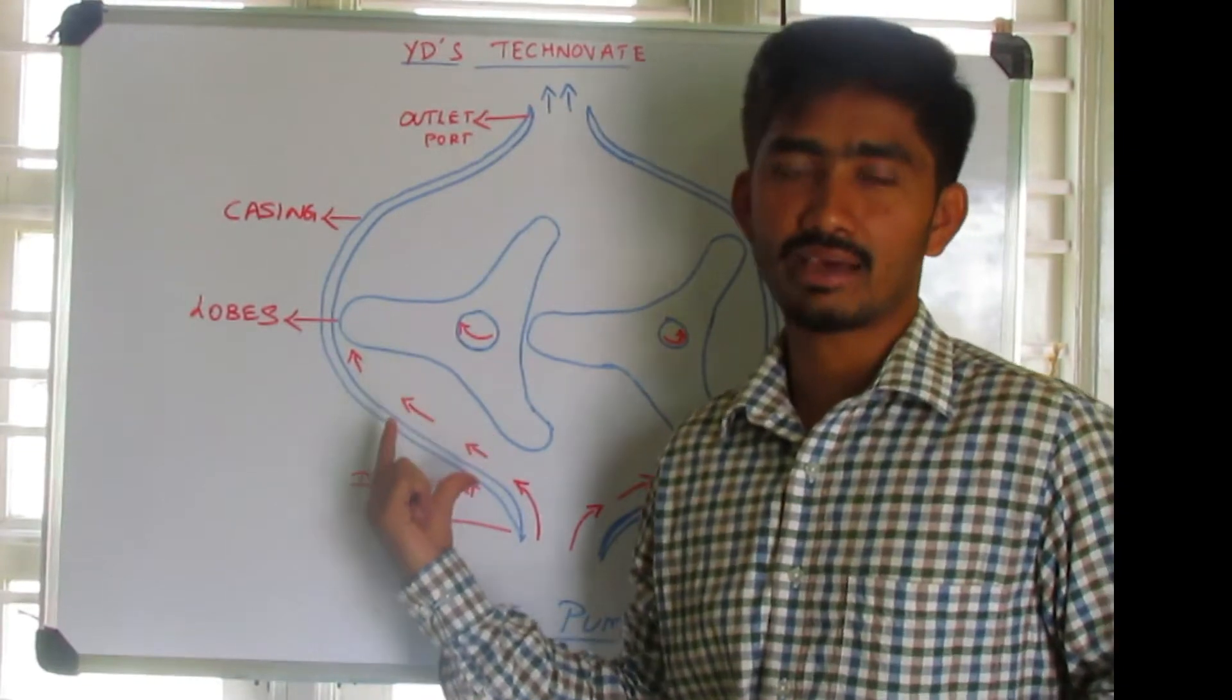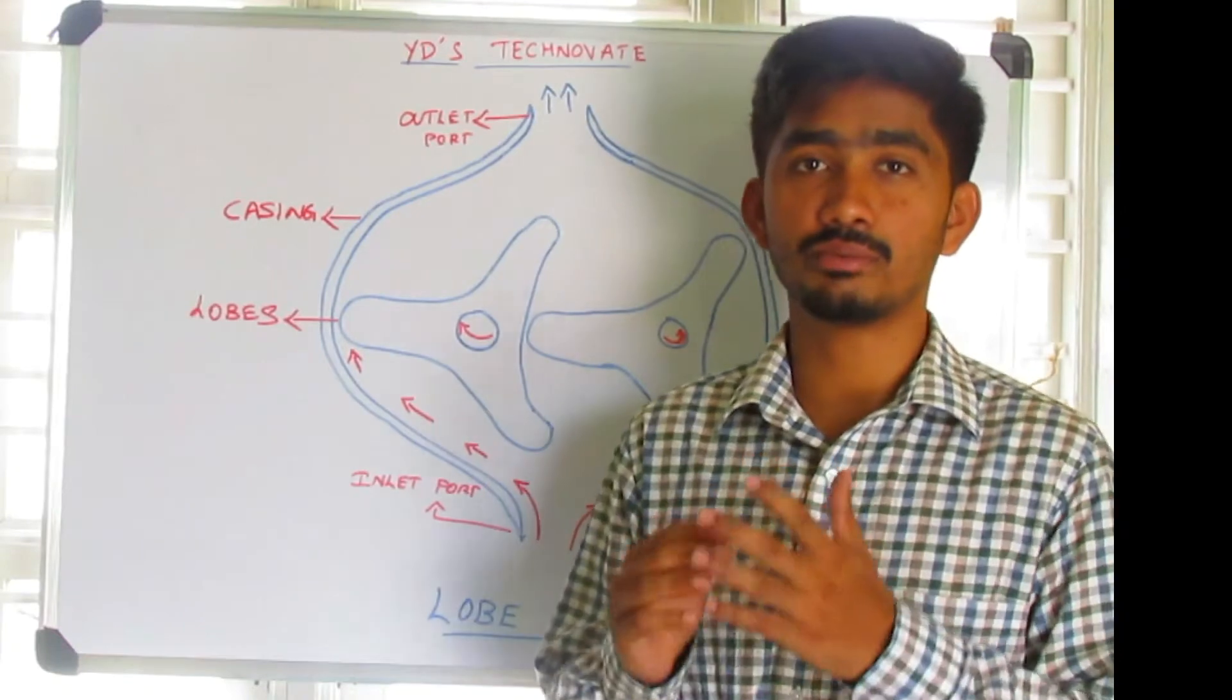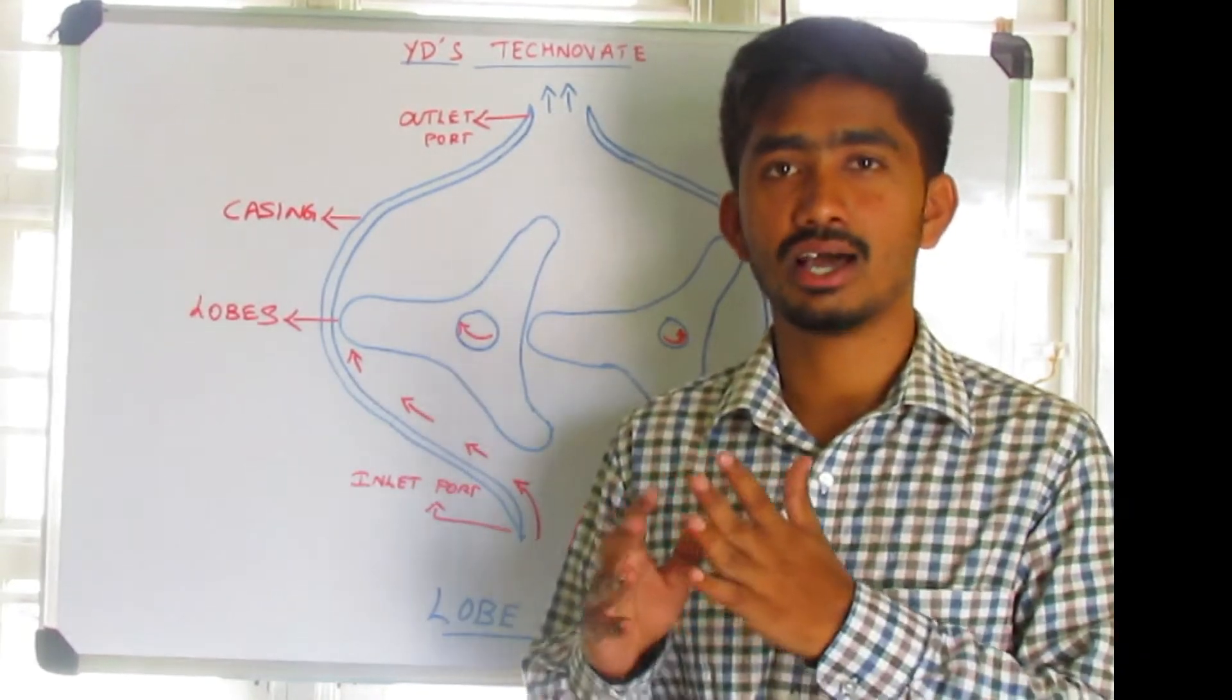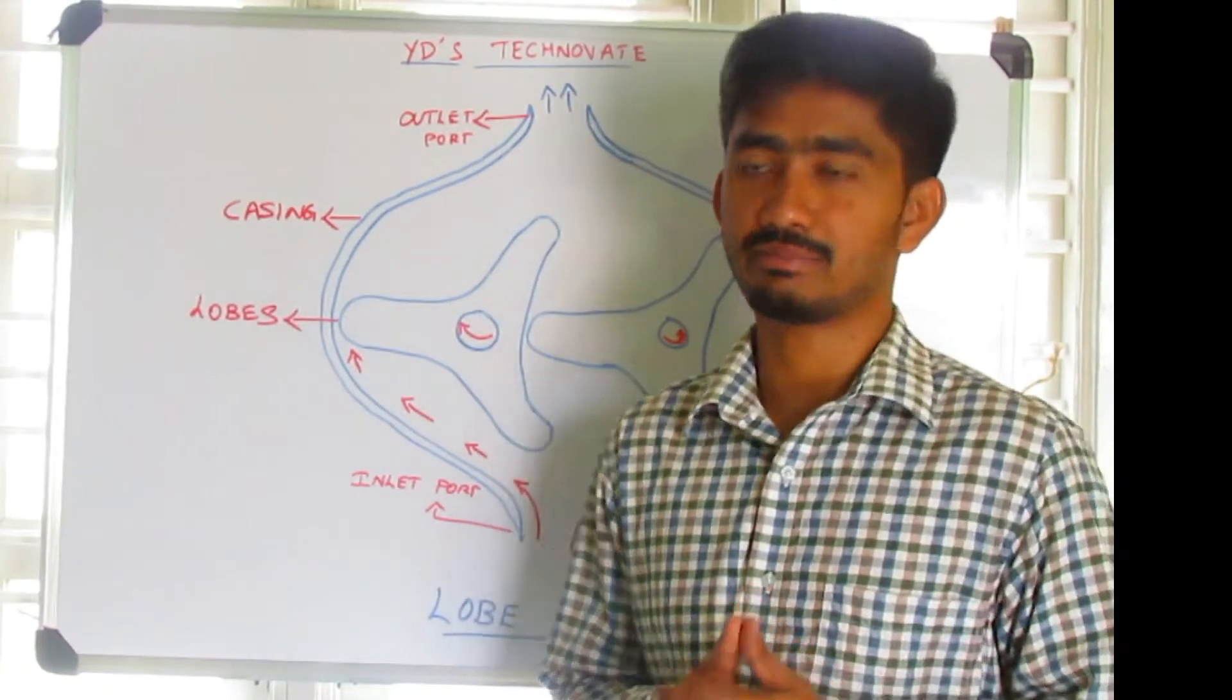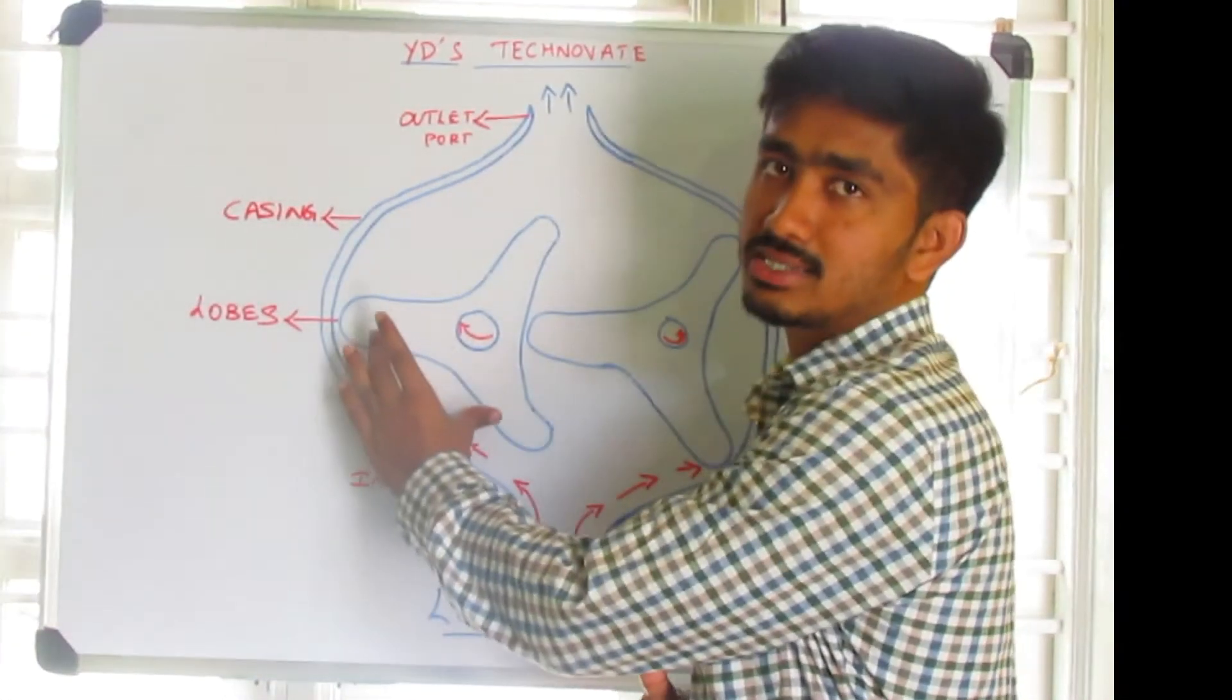So this causes pulsations in the flow and also the volumetric displacement will be high when compared to external gear pumps. As we can see, the gap between these two teeth is very much high, hence the volumetric displacement will also be high when it is compared with external gear pumps.